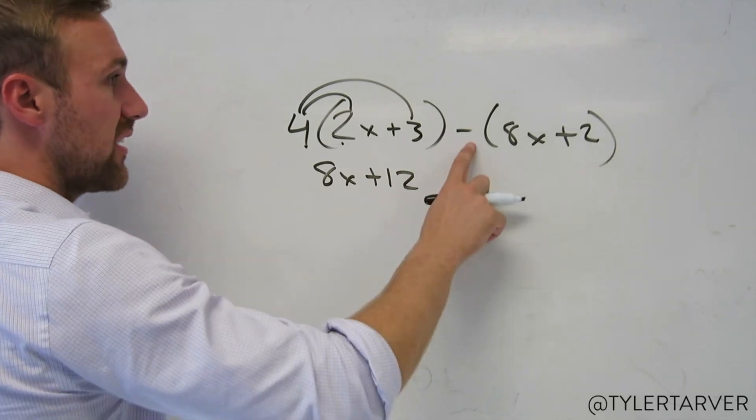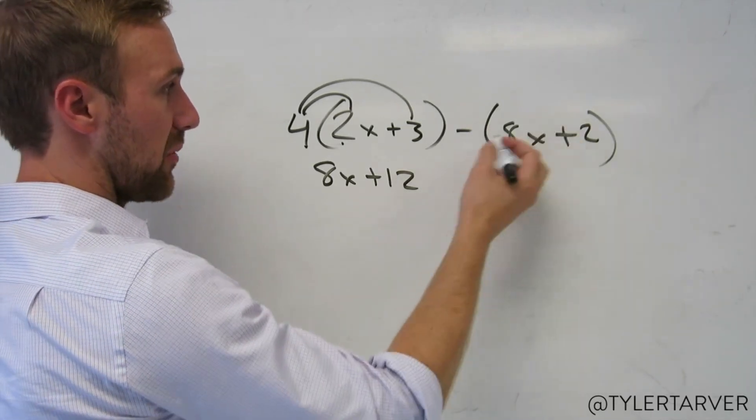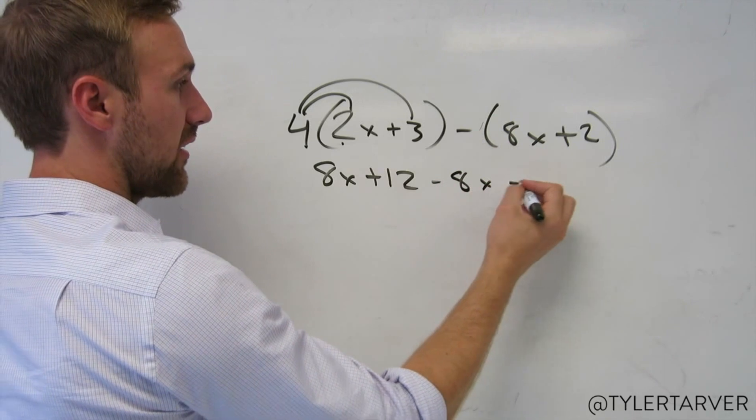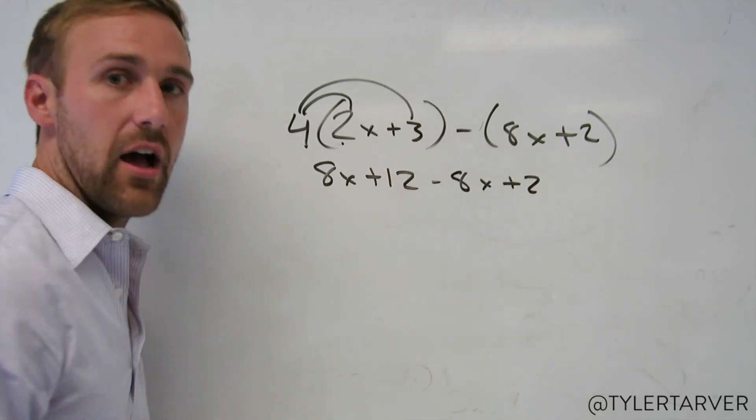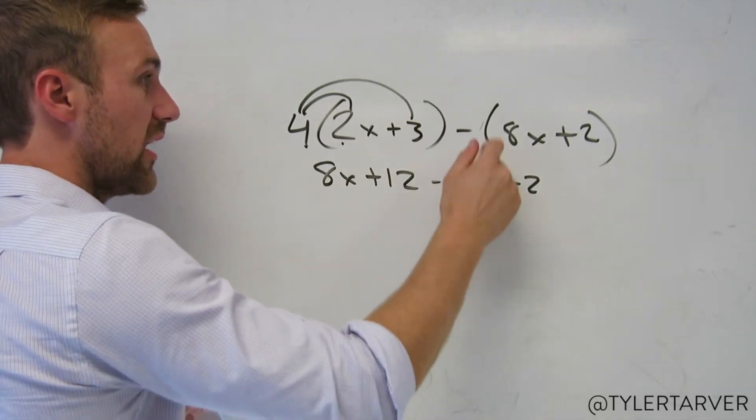Here's where people mess up. They'll take this part and they'll just drop the parentheses. I mean, there's no number there, so let's drop off the parentheses. Make that negative 8x plus 2. Yeah, screwed up. This right here is where you screwed up.